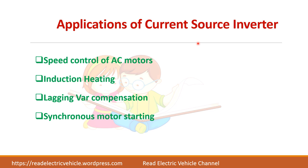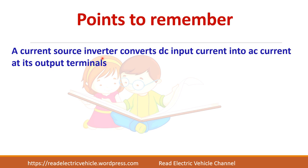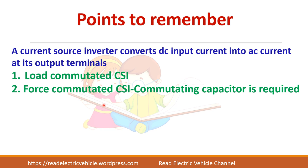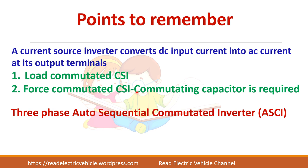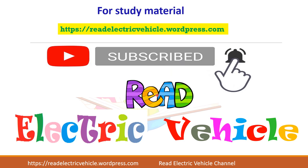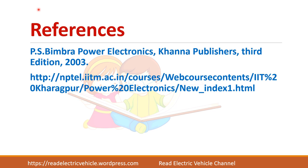The applications of the current source inverter include speed control of AC motors, induction heating, lagging VAR compensator, and synchronous motor starting. Key points to remember: a current source inverter converts DC input current to AC output current; there are two types — load commutated and force commutated; in force commutated you use a capacitor for commutating the thyristor; and the three phase autosequential commutated inverter is widely used in industry.